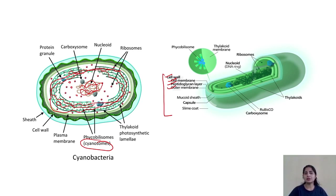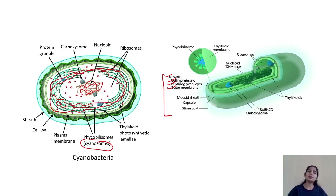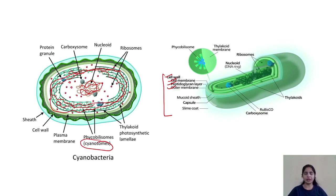Because of this, the cyanobacteria cell is divided into two parts: the central region, which will be transparent because it does not have a definite color, and the outer cytoplasm, which has a definite coloration due to the presence of specific types of pigments. Thylakoid membranes are present, along with phycosomes which carry the pigments.